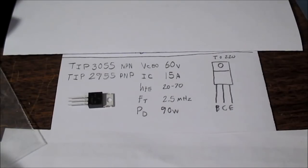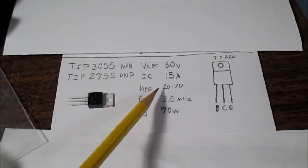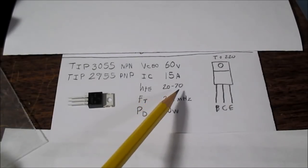Next up is the TIP3055 NPN, or the TIP2955 complement PNP transistor. I included these because for a power transistor, they are pretty cheap. Though they are nothing really special. Under high current, such as 10 amps, the gain can drop pretty low, down to 10 or so. But I think the datasheet specified the gain at 4 amps, 20 to 70.